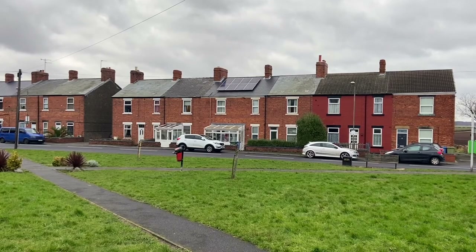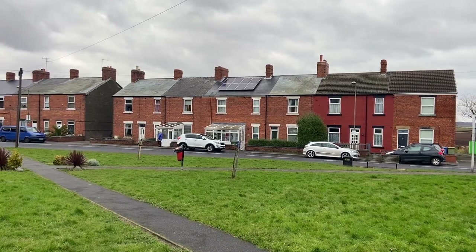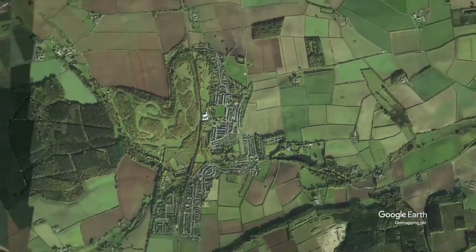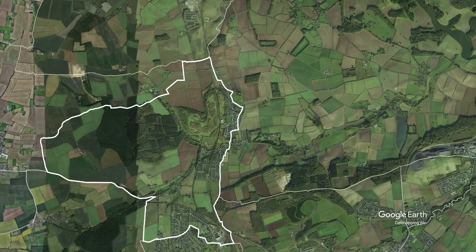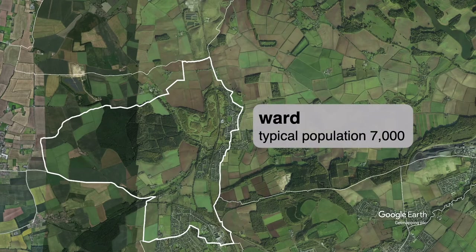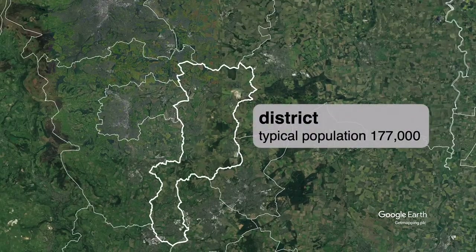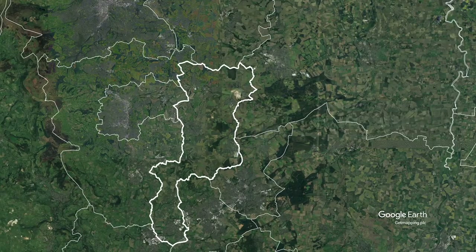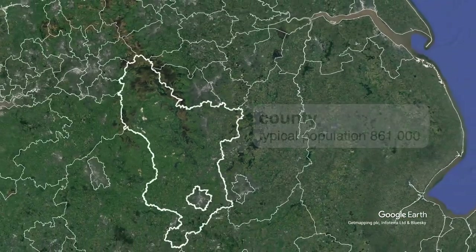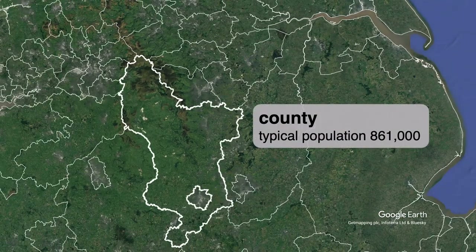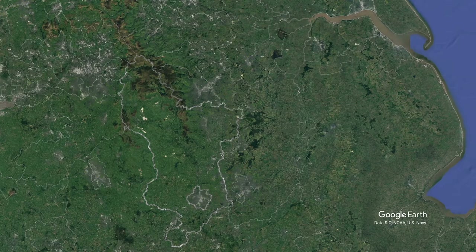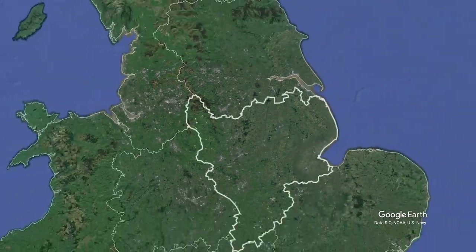So that might say, for example, the average income in a particular neighbourhood or the number of people who have a university degree. One of the choices that statistical agencies have to make is what areas to publish that data for, and often that will be done for administrative areas. In England, the smallest administrative area is a ward. Wards are aggregated into districts, and district councils provide services like housing. Districts in turn are aggregated into counties, which provide lots of services — social services, libraries, that sort of thing — and then counties are aggregated into regions.